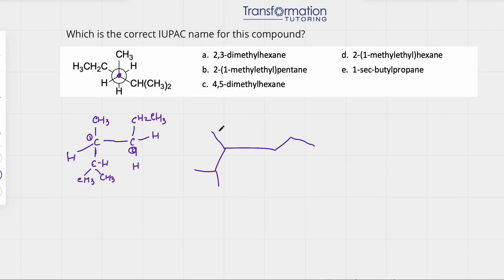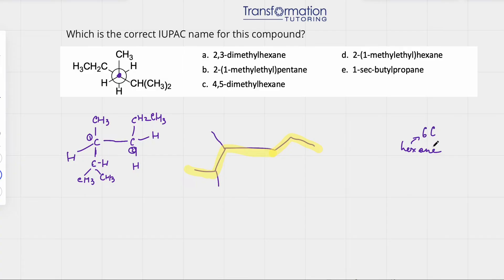To name our molecule, we first look for the longest continuous carbon chain. The longest continuous carbon chain is one, two, three, four, five, six — six carbons. Six carbons means we use the prefix 'hex,' so it must be hexane. We can eliminate the pentane and propane options.